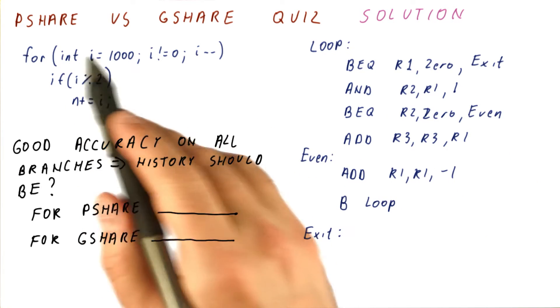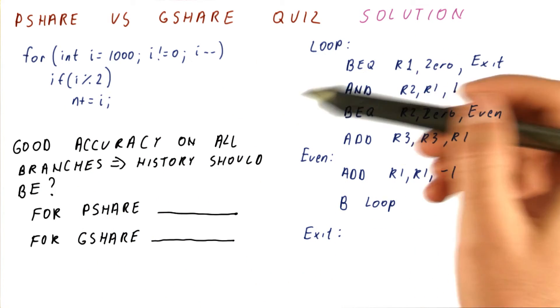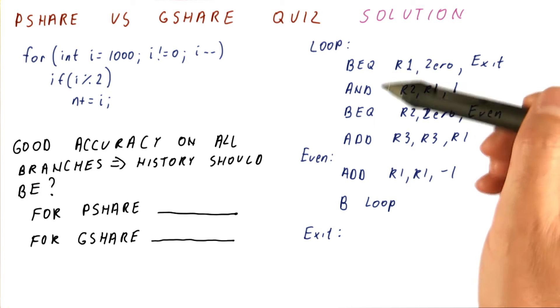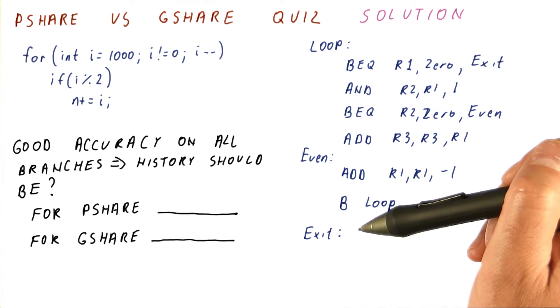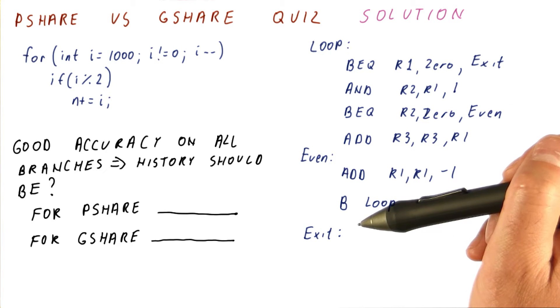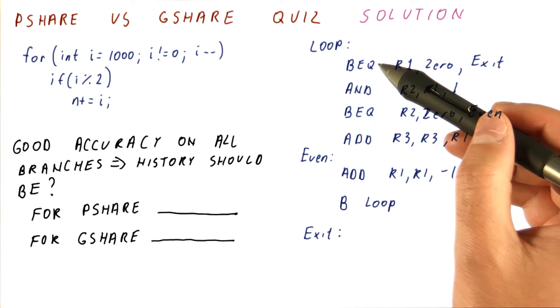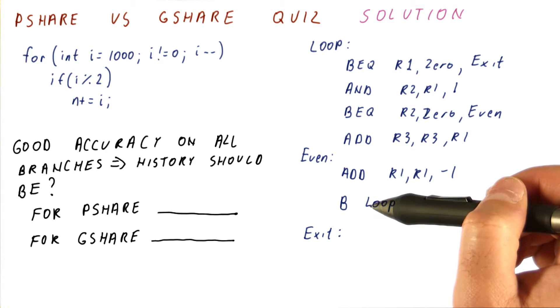Let's have the solution for our P-share versus G-share quiz. The question is, for all of the branches in this code, how much history do we need to make them all very well predicted? We have one, two, three branches.